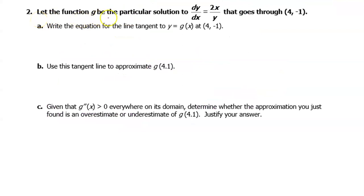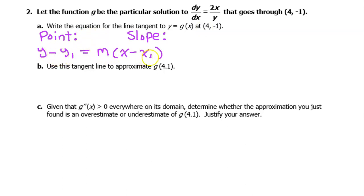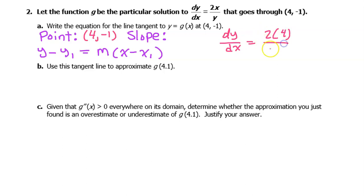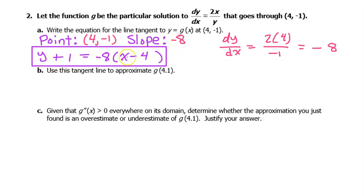Number 2. Let function g be the particular solution to dy/dx equals 2x over y that goes through 4 comma negative 1. For part A, write the equation for the line tangent to y equals g of x at 4 comma negative 1. Using point-slope form, we have the point 4 comma negative 1. The slope is found from the derivative: 2 times 4 over negative 1, which equals negative 8. Now we have the point and the slope needed for the tangent line equation.